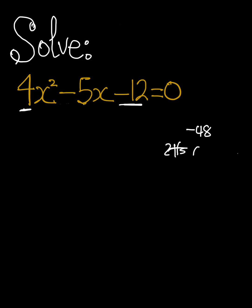What are the two numbers when we multiply, we're going to get negative 48, and when we add those same two numbers, we're going to get negative 5. Be careful of the sign next to the 5. It's negative 5.